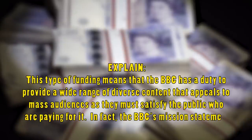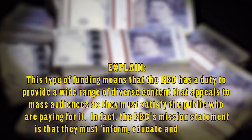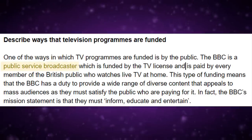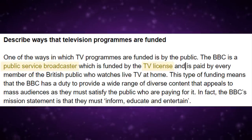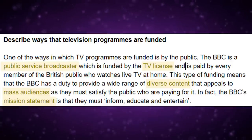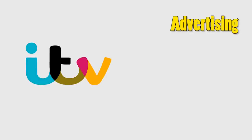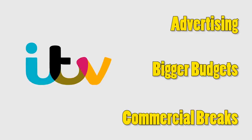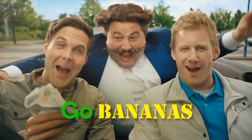Continuing the paragraph: 'This type of funding means that the BBC has a duty to provide a wide range of diverse content that appeals to mass audiences, as they must satisfy the public who are paying for it. In fact, the BBC's mission statement is that they must inform, educate and entertain.' The key terms used here are: public service broadcaster, TV licence, diverse content, mass audiences, and mission statement. The next paragraph would move on to discussing how ITV receives funding through advertising, and how this affects content in terms of bigger budgets and adverts being shown during intervals.